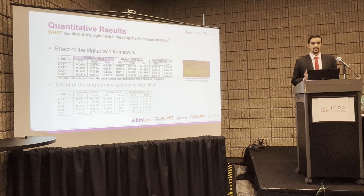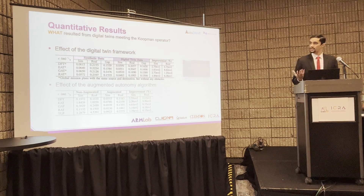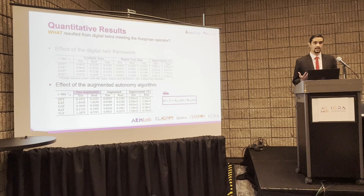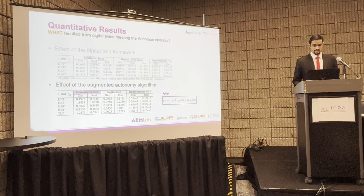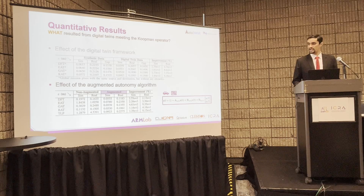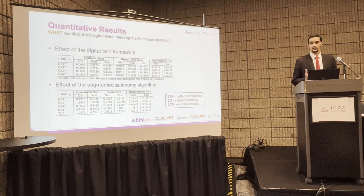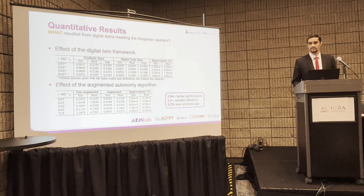Speaking quantitatively, we performed two different experiments. In the first, we analyzed the effect of the digital twin framework — comparing model performance with digital twin data versus synthetic data — and were able to achieve positive improvement with the digital twin data, although it was four times less in quantity. The effect of augmentation was captured by comparing augmented versus non-augmented approaches, where we also observed positive improvement. Overall, we achieved six times better performance in off-road navigation, with over three times the sample efficiency using the digital twin framework, and all of this with over 5% reduction in the error metric.